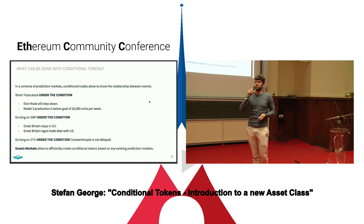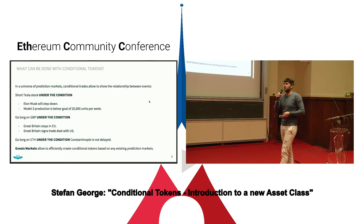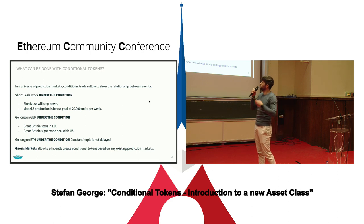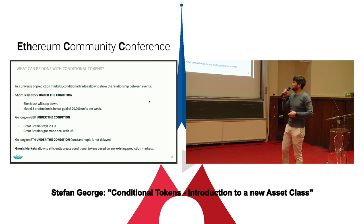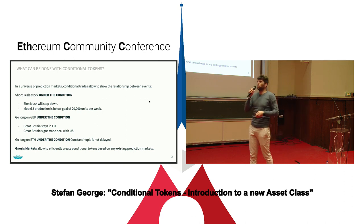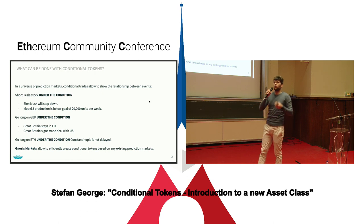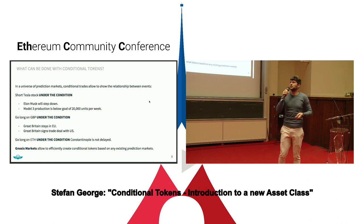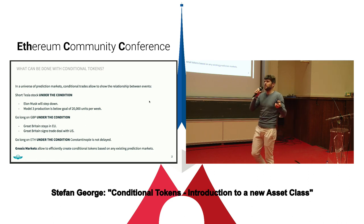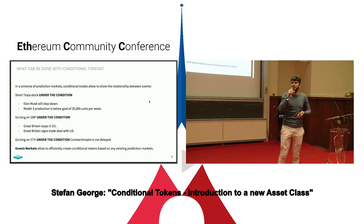Now with conditional tokens, we allow to short or go long or do investments in general under certain conditions. For example, for Tesla there could be a market where you can short Tesla under the condition that Elon Musk will step down or that Tesla will not ramp up their Model 3 production. Then you could see what the price difference is between the Tesla stock under the condition that those events happen or not, and this can create clear signals how a company should behave.